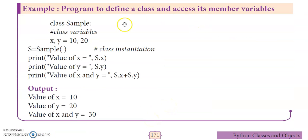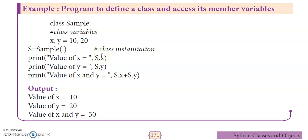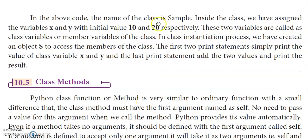Program to define a class and access its member variables. First, create class named sample with two class variables: x, y = 10, 20, using proper indentation. Then, s = sample() creates an object — class instantiation — where object name is s. Using dot operator: s.x gives value 10, s.y gives value 20. We can also do manipulation: s.x + s.y gives 10 + 20 = 30.